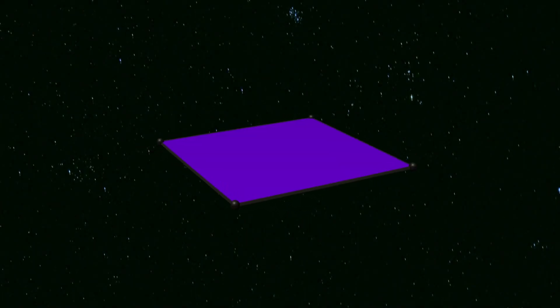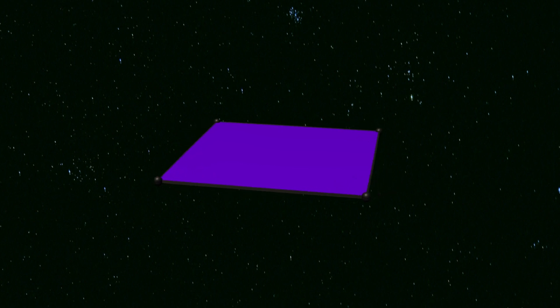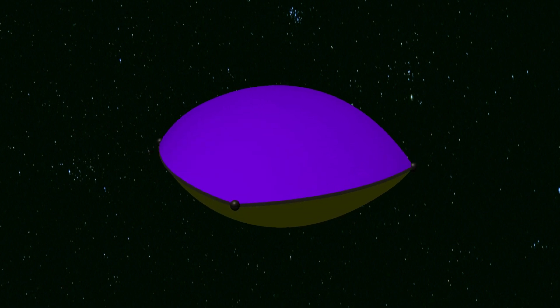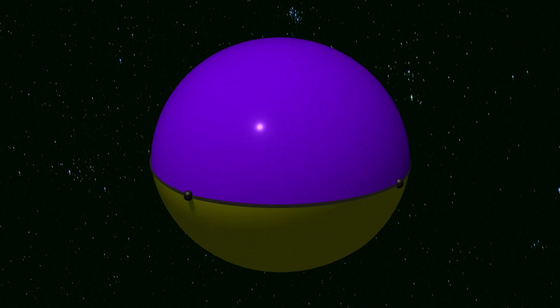For a dihedron, one face is pulled up to the north pole of the sphere, and the other pulled down to the south pole. The vertices form a ring around the equator, connected by a great circle of edges.